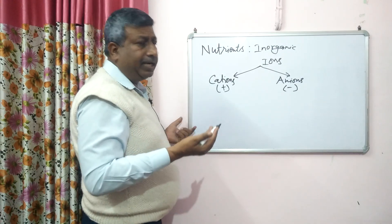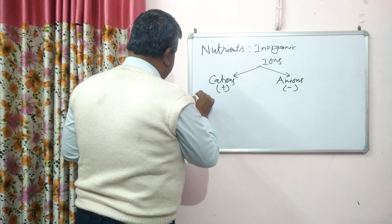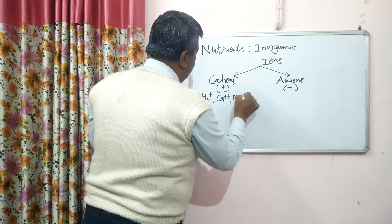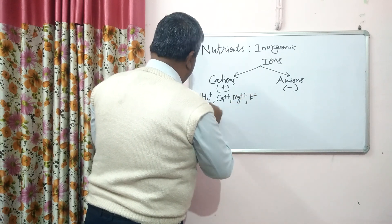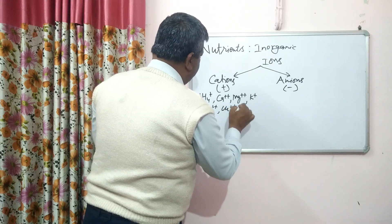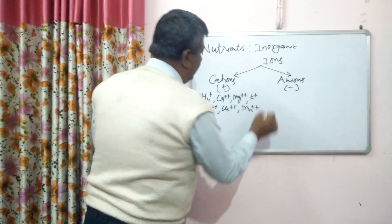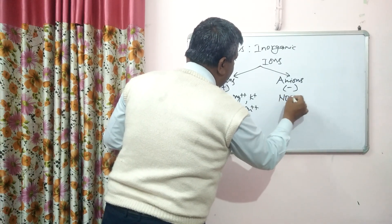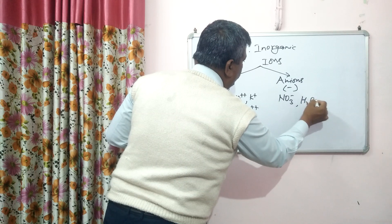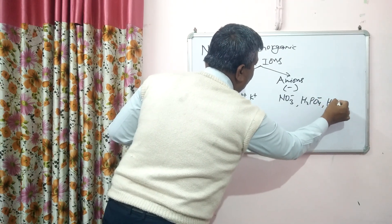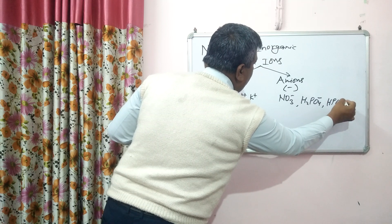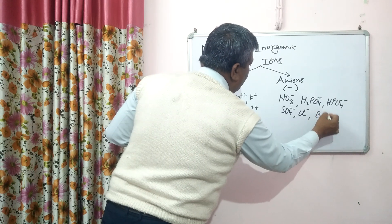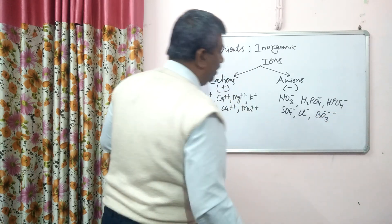Nutrients may be cations or anions. Cations include ammonium, calcium, magnesium, potassium, zinc, copper, and manganese — these lose electrons. Anions include nitrate, H₂PO₄⁻ (primary orthophosphate ion), HPO₄²⁻ (secondary orthophosphate ion), sulfate ion, chloride ion, and borate ion.